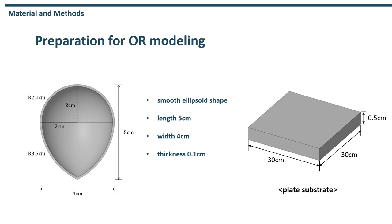Second, materials and methods. This is the model used for the analysis. First, we designed the oyster simply. The oyster shell is modeled in a smooth ellipsoid shape. Its length, width, and thickness are 5 cm, 4 cm, and 0.1 cm, respectively. The figure on the right is the plate substrate. We also modeled the plate substrate to install the oyster shell, and the dimensions are shown in the figure.